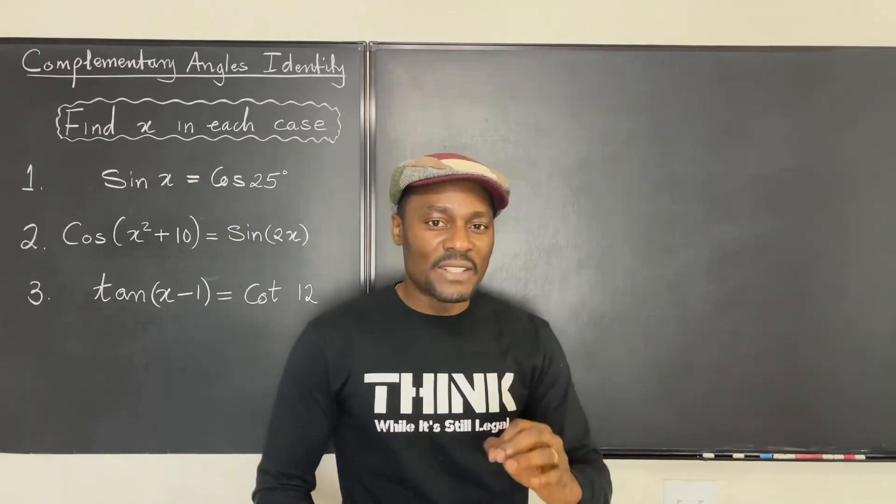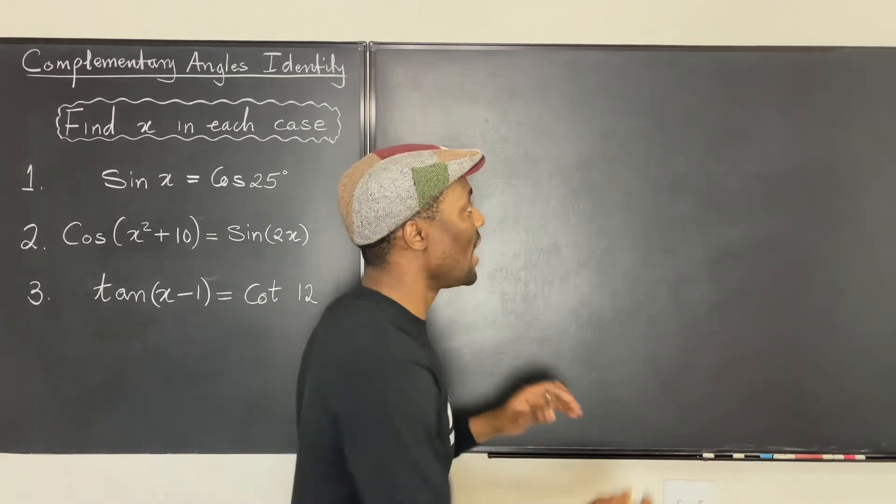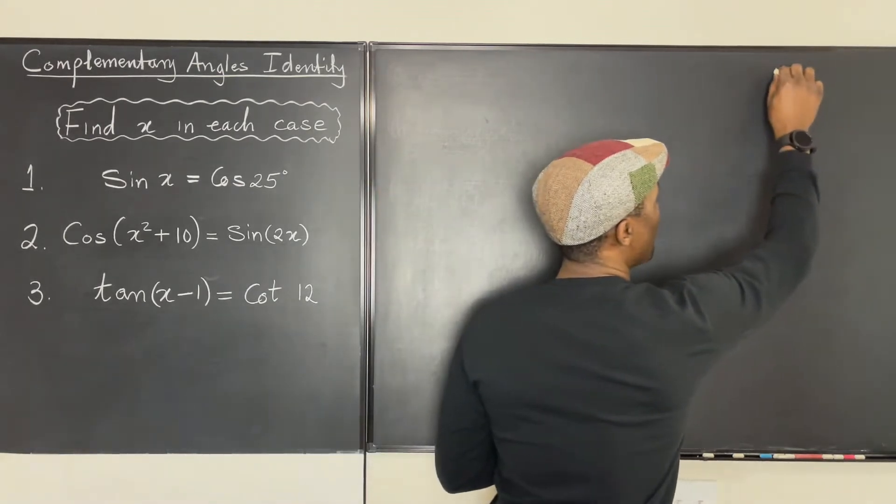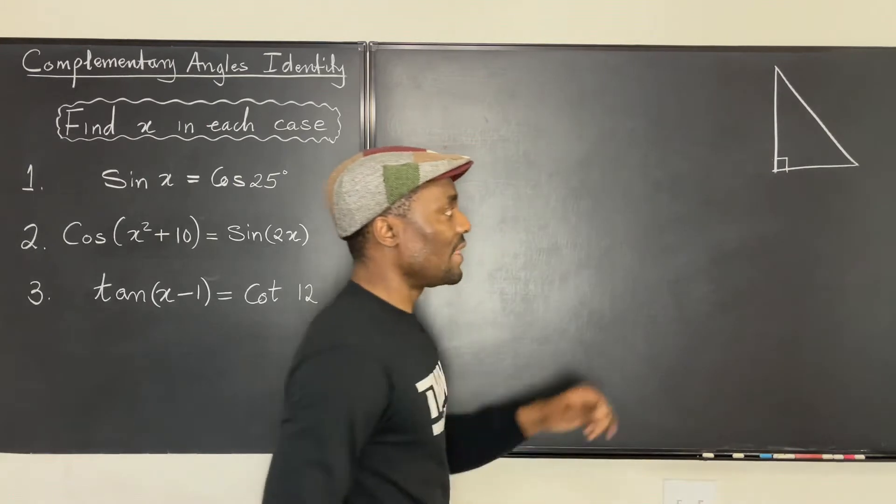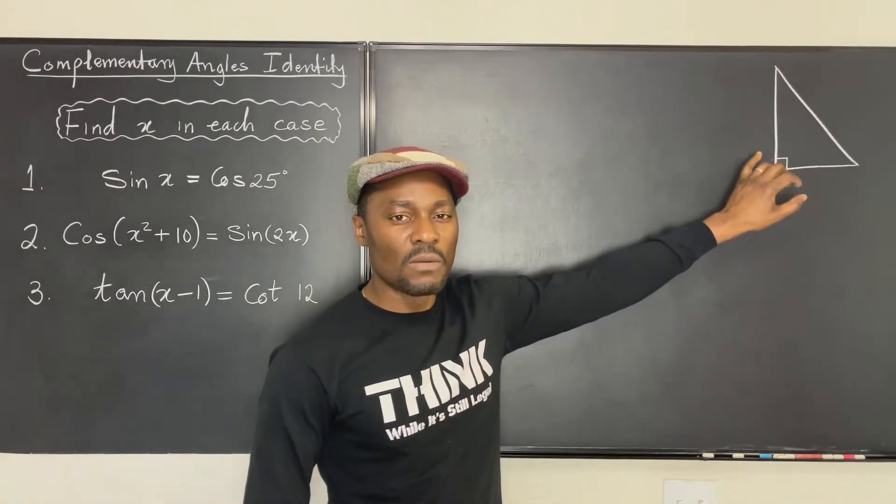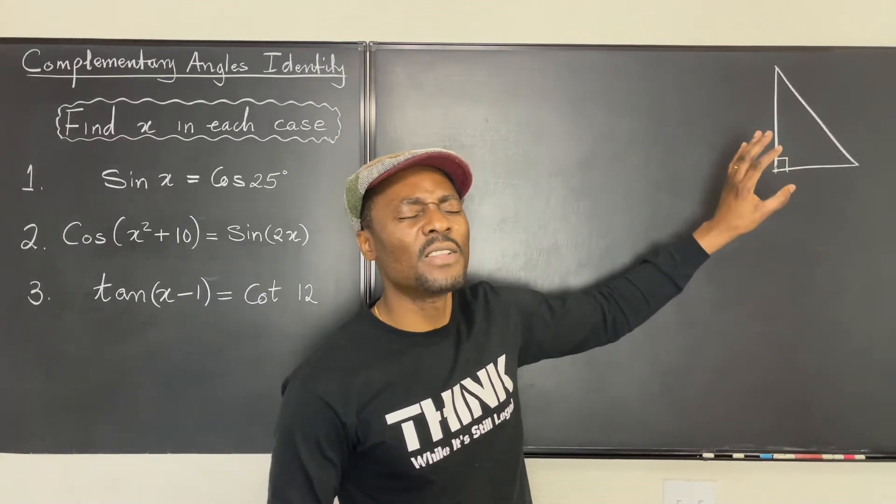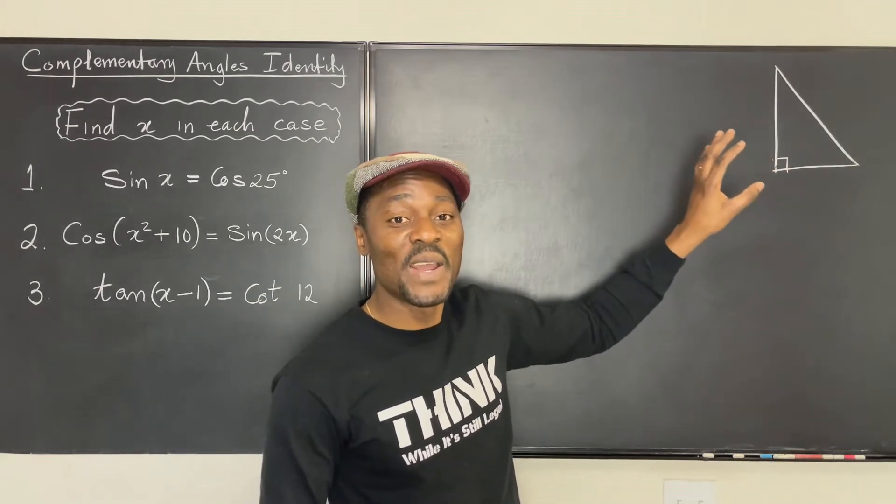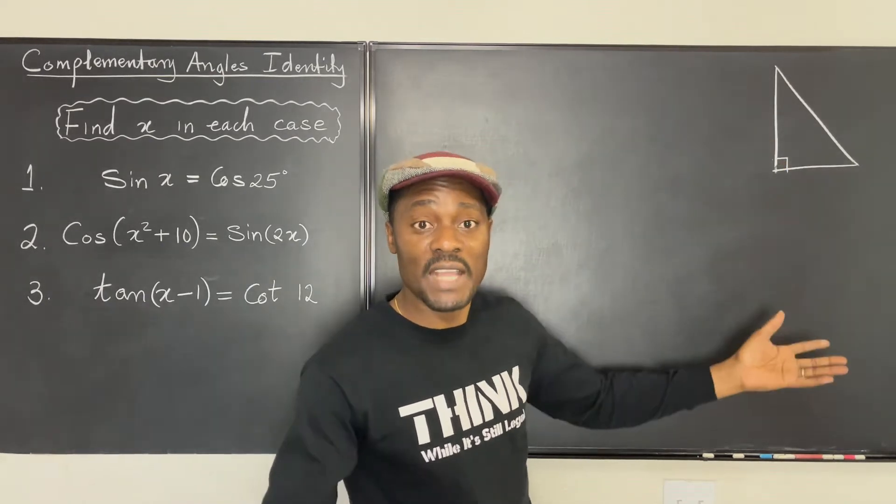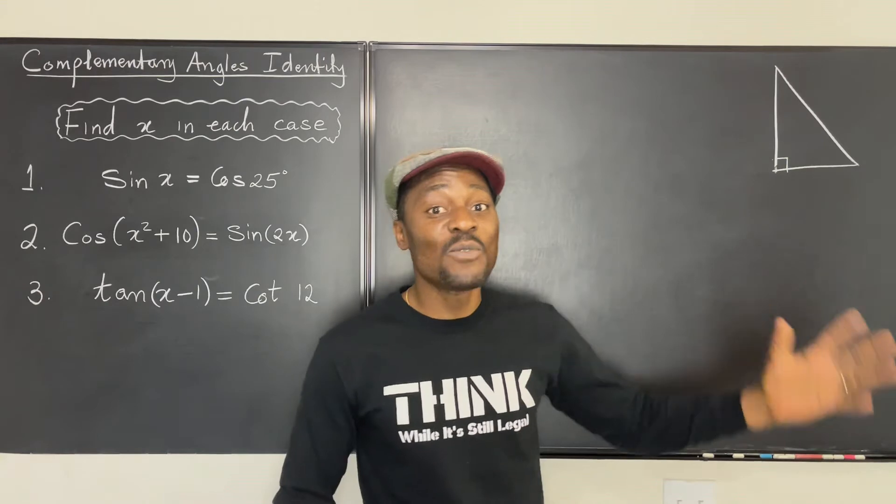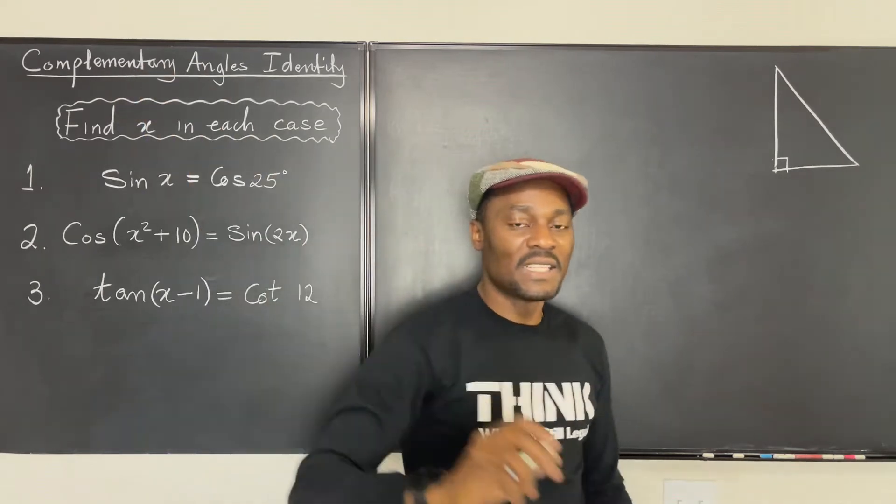Now the right triangle has a special property. Remember, one of the angles is already 90 degrees. The sum of the angles in a right triangle is always 180 degrees. So if you've taken 90 degrees out of 180, the remaining must add up to 90 degrees. And that's why the two angles in any right triangle will always be complementary. They will always have this property.